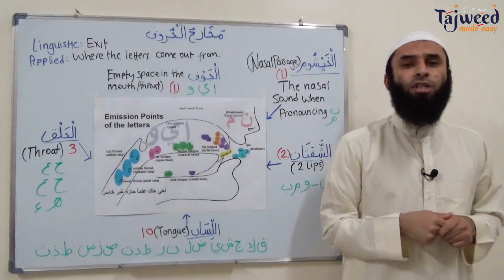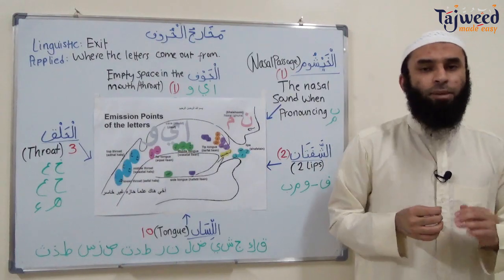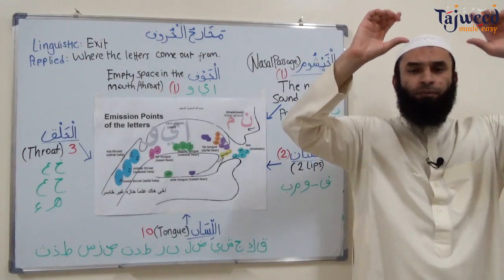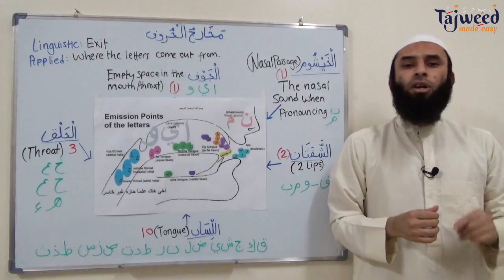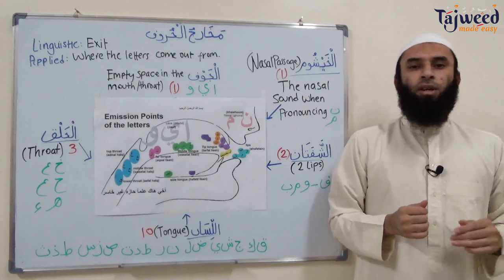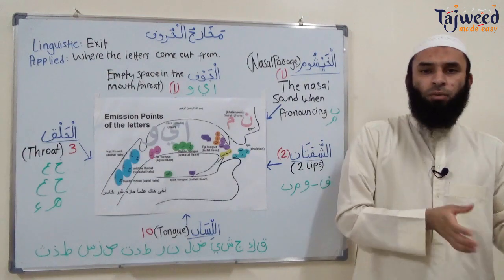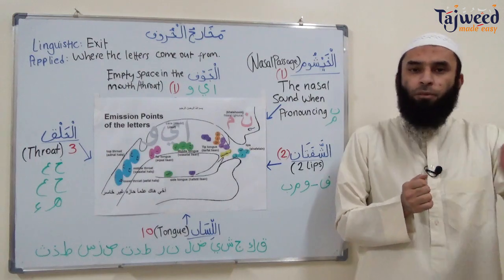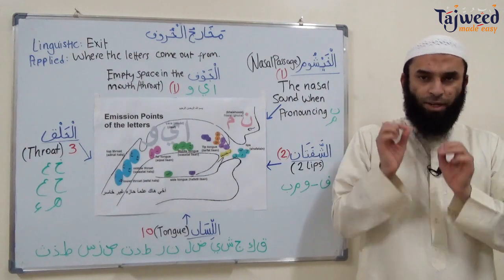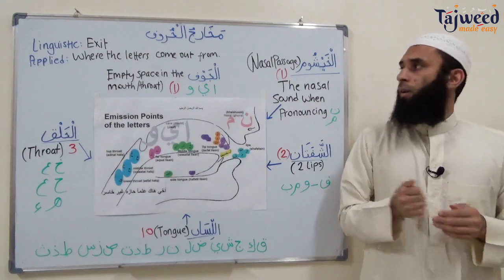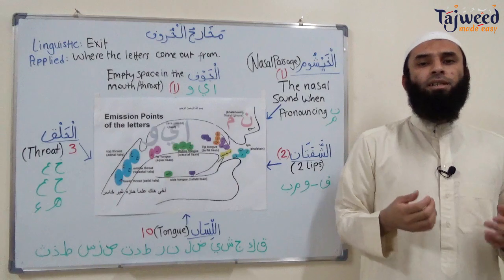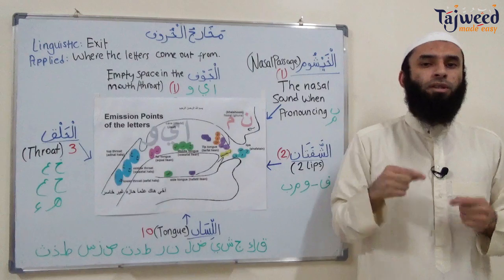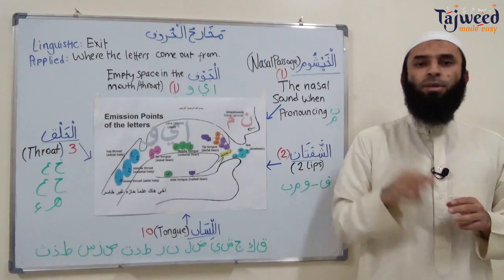As for مَخَارِجُ الْحُرُوفِ, مَخَارِجُ is a plural of the word مَخْرَج. مَخَارِجُ linguistically means exit. If you live in an Arab country, above the door of malls and schools and offices, you find the word مَخَارِجُ which means exit, come out. This is the linguistic meaning. As for the applied meaning in the Quranic Tajweed context, it means where the letters come out from — the specific places where the areas come out from. The word حُرُوف is a plural of حَرْف which means letters. A letter is just a sound that relies on a specific مَخْرَج, a specific point.